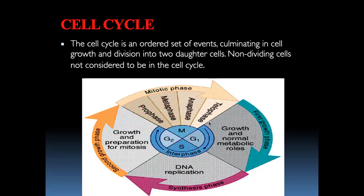Once cell division is complete, cells enter a phase called interphase. You can draw this diagram because the cell cycle can be a short-note question. After four mitotic phases complete, the cell enters interphase. In interphase, there is a resting phase between the mitotic phase and the growth phase. Some cells go into this resting phase - also called the dormant phase - and do not divide at all, remaining in G1 phase.